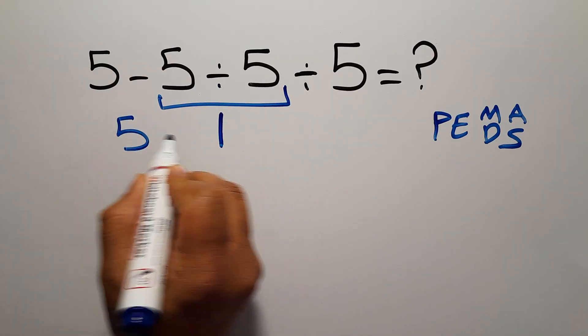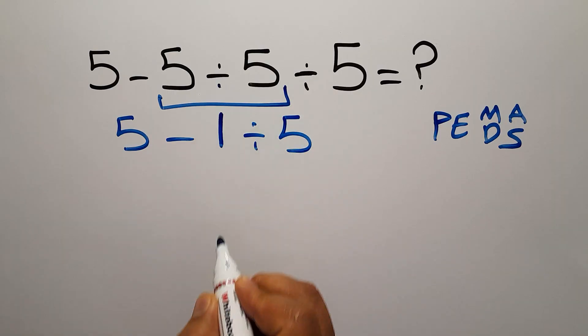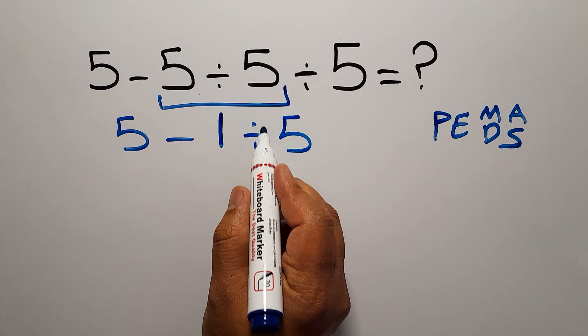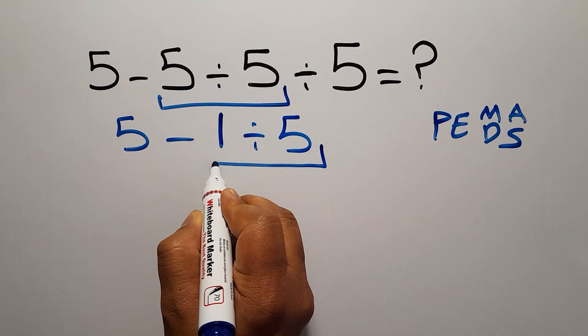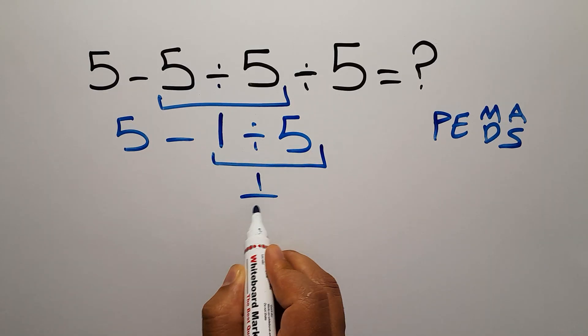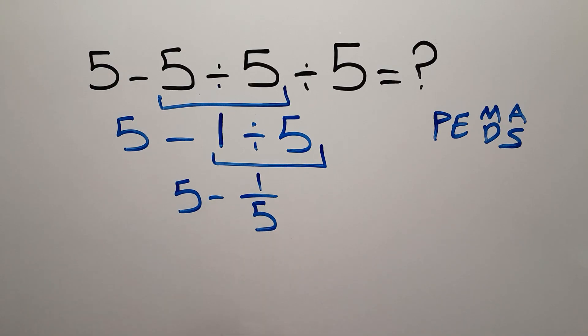So 5 minus 1 divided by 5. No, we have to do this division, 1 divided by 5. We can write 1 over 5. So 5 minus 1 over 5.